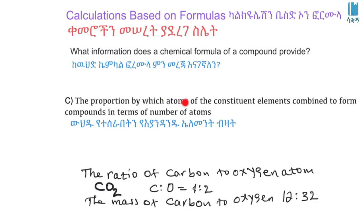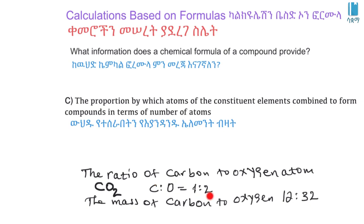The chemical formula also gives us the proportion by which atoms of each element combine to form the compound, in terms of the number of atoms — that is, the atom-to-atom ratio — as well as the mass-to-mass ratio. For carbon dioxide, we can find the ratio of carbon atoms to oxygen atoms.